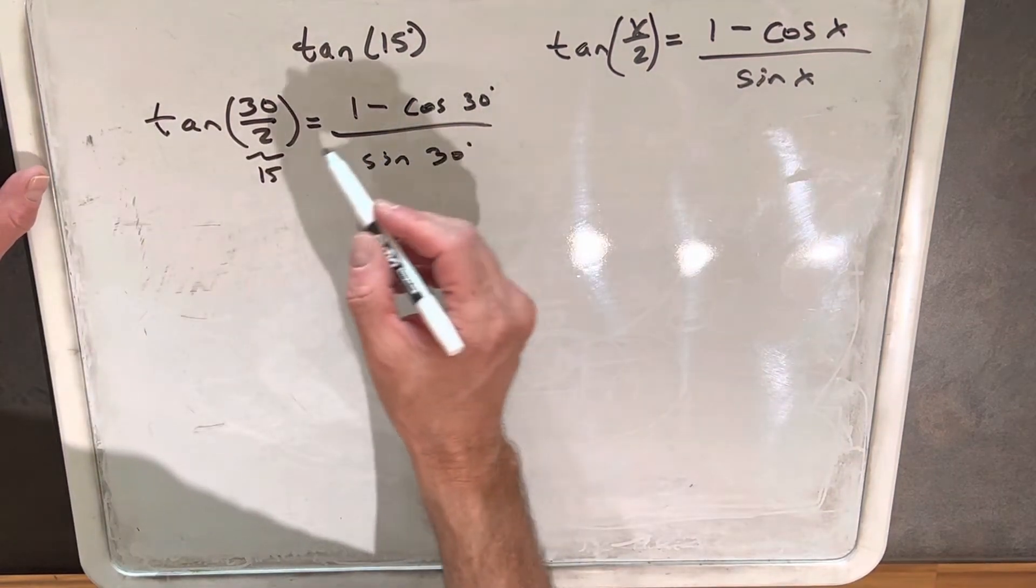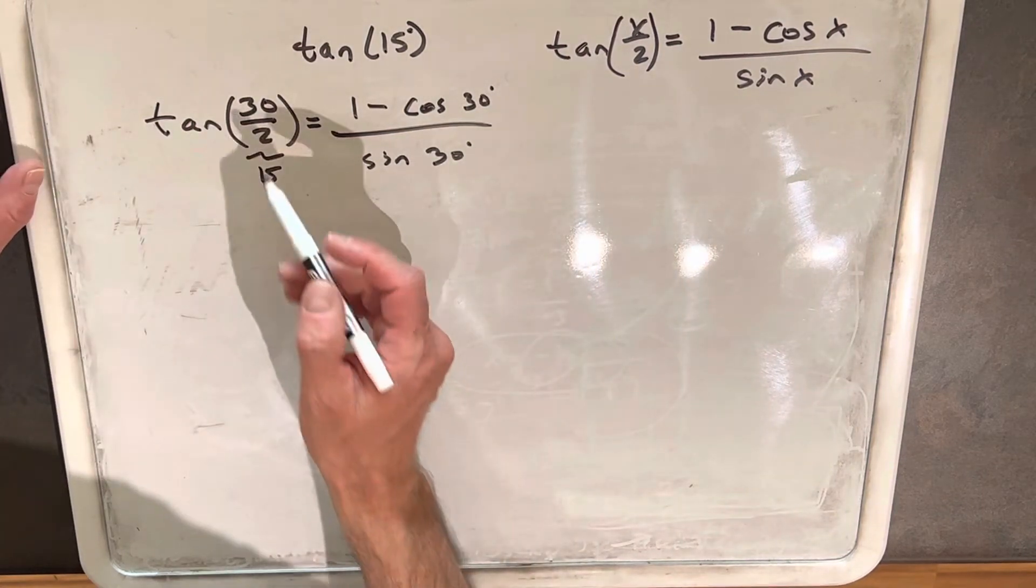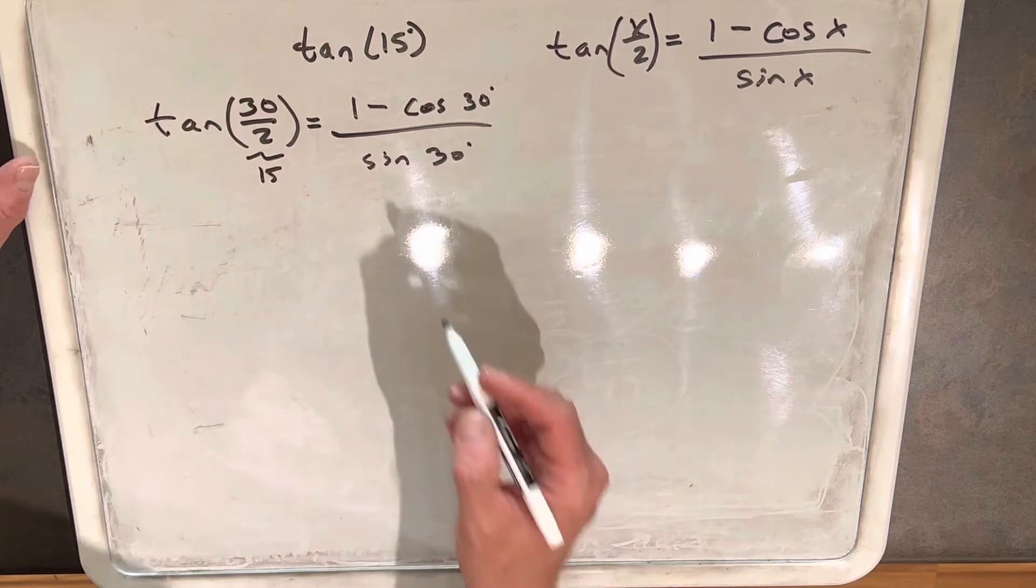The key thing we're using here is that we don't know tan of 15, or I don't know tan of 15 off the top of my head, but we know what tan of 30 is and we know what cosine and sine of 30 is.